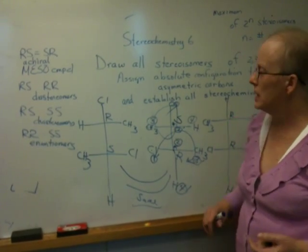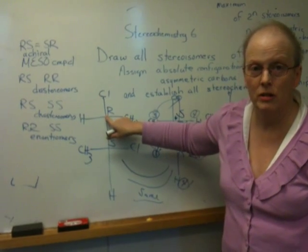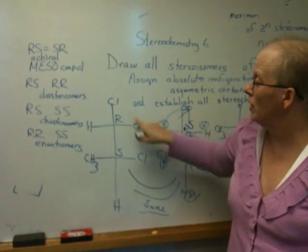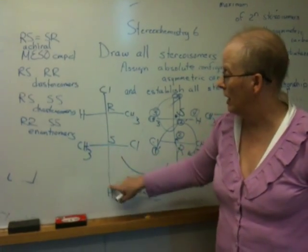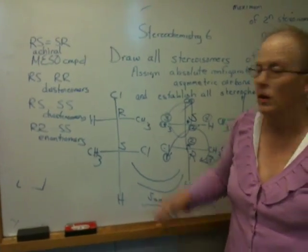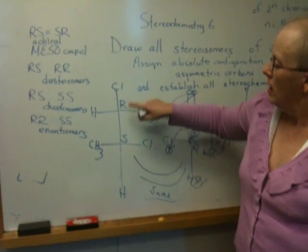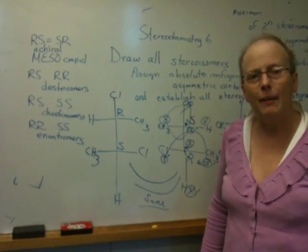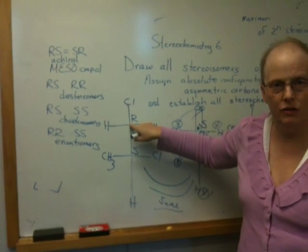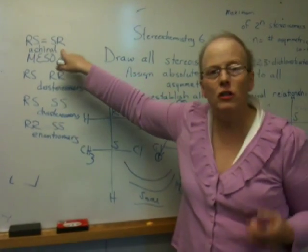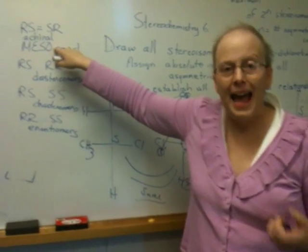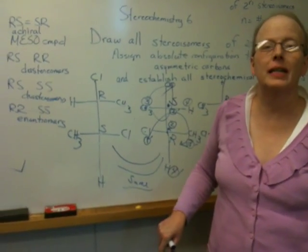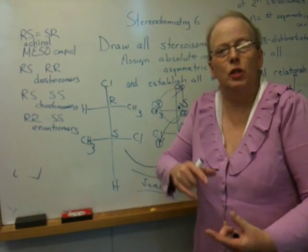What makes this a special case? What makes this a special case is that this center has the same four groups on it as this center. This center has a chlorine, a methyl, and a hydrogen. And this center has a chlorine, a methyl, and a hydrogen. And then you can look at the other center as the fourth group. But they have the same four different groups on them. This one is R, and this one is S. What does that mean if they're the same groups? What that means is that this center is the mirror image of that center. So I always tell students that these special achiral compounds that are called meso compounds happen when you have the same four different groups on each center, and one center is the mirror image of the other center. It's the equivalent of having two enantiomers bonded to each other.